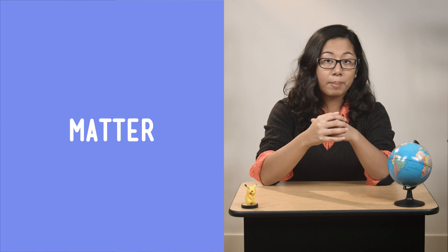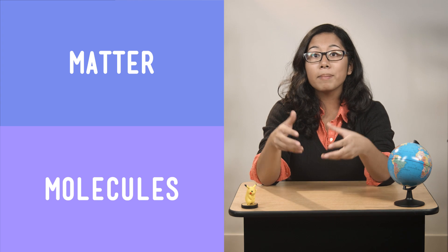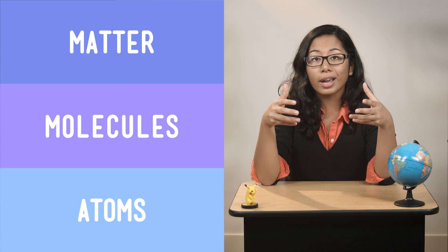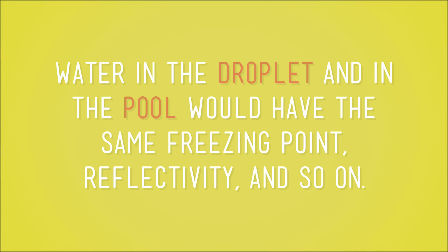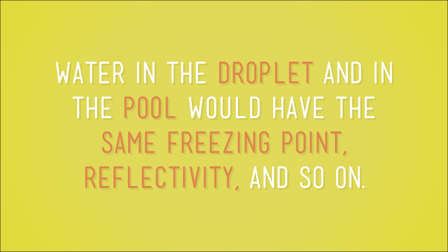You already know that everything is made of matter. Some of the particles that make up matter are called molecules, and the particles that make up molecules are called atoms. Molecules and atoms are the smallest units of a substance. A substance is just matter that's all made of one kind of atom or molecule. And since it's all made of the same stuff, it all has the same properties. Take water — whether you have one drop of pure water or a swimming pool full of pure water, the water is made of the same molecules, and so it has the same properties. Water in the droplet and in the pool would have the same freezing point, reflectivity, and so on.